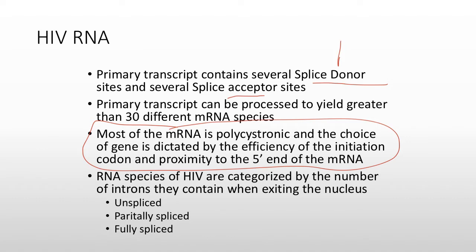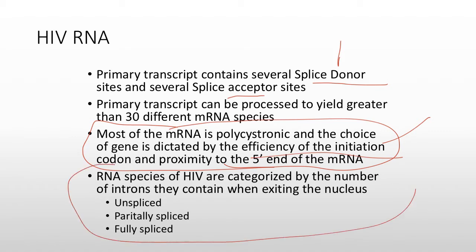Which reading frame you get the most or least of is dictated by two things: first, how close it is to the 5' end of the mRNA, and second, the efficiency of the initiation codon. There's one other factor — whether or not a frameshift is induced into the peptide chain as it's growing, which is how we get all of the POL proteins. The RNA is classified as unspliced, partially spliced, or fully spliced.